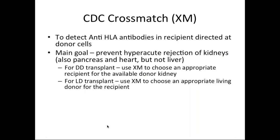The CDC crossmatch is done to detect anti-HLA antibodies in the recipient directed against donor cells, primarily to prevent hyperacute rejection of the kidney. It can also be used for pancreas and heart transplants. The liver is usually excluded because it's a tolerogenic organ. In the deceased donor transplant setting, the crossmatch helps choose the appropriate recipient for the kidney. In living donor transplant, it helps choose the appropriate donor for the recipient.